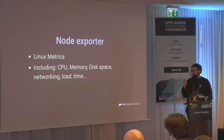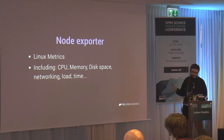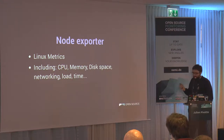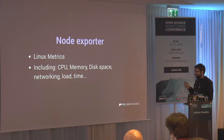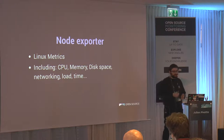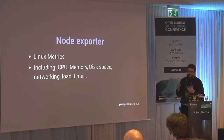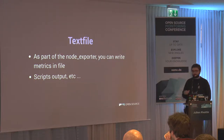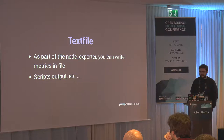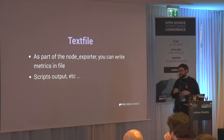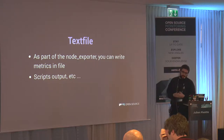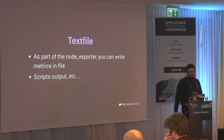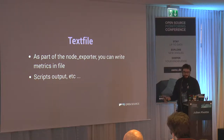The first and most important exporter is the node exporter. It fetches your Linux and Unix metrics — CPU, memory, disk space, network, load, and time. That exporter also has a text file collector, so if you have a bash script that writes metrics to a file, the node exporter can expose those as well. This is very convenient when you don't want to write your own exporter — it's easy and comes for free with the node exporter.